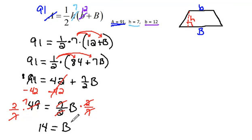Now, that's just one way of looking at that. We could do it another way. We could say 91 equals 1 half times 7 times 12 plus b.